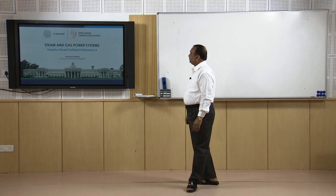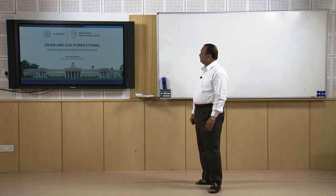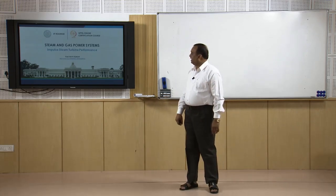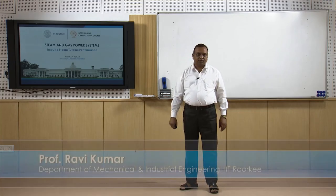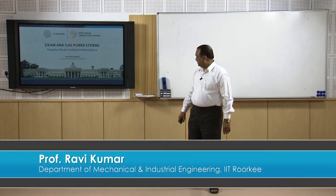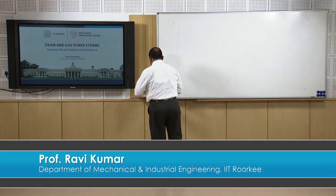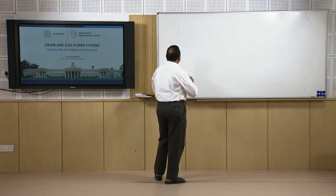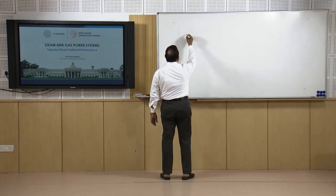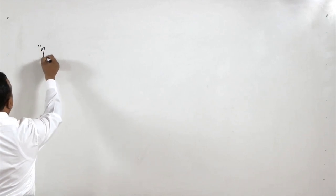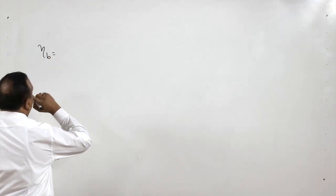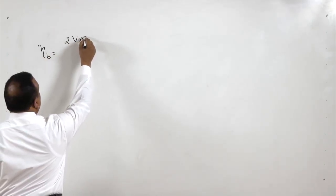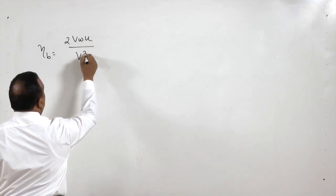Welcome to this course on steam and gas power systems. Today we will do the analysis on steam turbine performance. In the previous lecture, we have already found the blade or diagram efficiency for a single stage steam turbine as W_u times u divided by V1 squared.